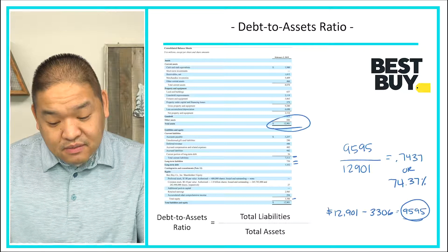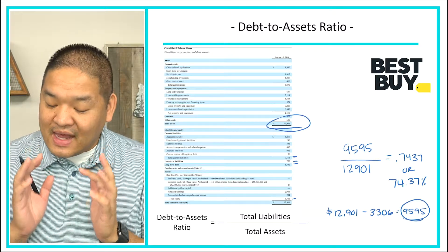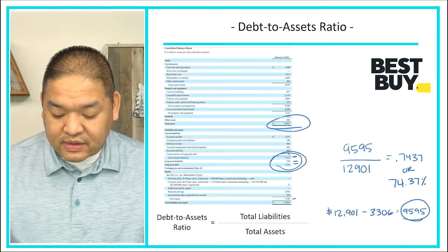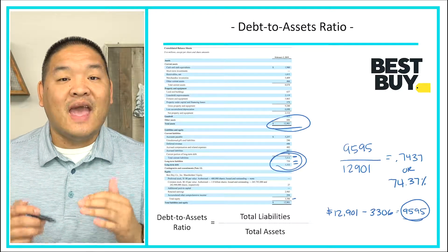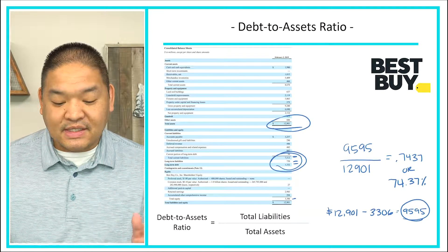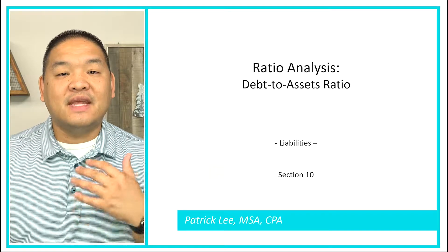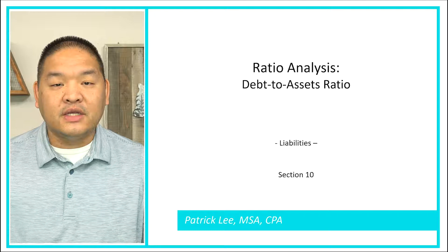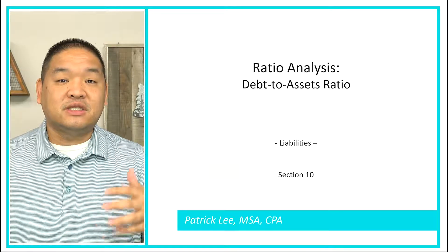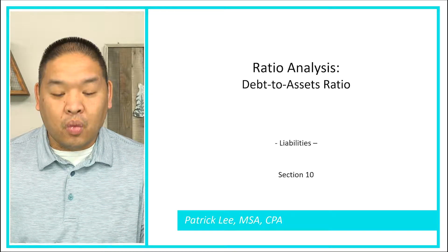Is 74.37% a good thing? Probably not, but Best Buy has been successful recently so it may be manageable. However, they owe roughly 9.5–9.6 billion dollars in debt and must also pay interest on that amount, which is concerning from a risk standpoint. We want the debt to asset ratio to be as low as possible, especially in industries where debt isn't the norm.